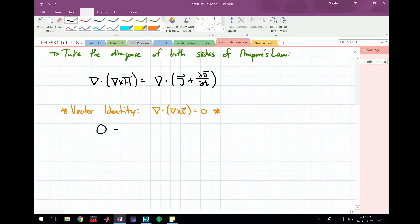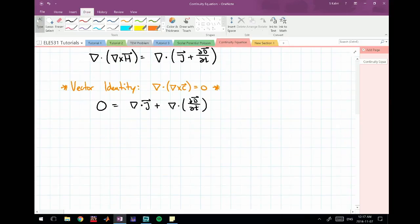So I can expand the divergence into the brackets, and I get the divergence of the partial derivative of D with respect to T.